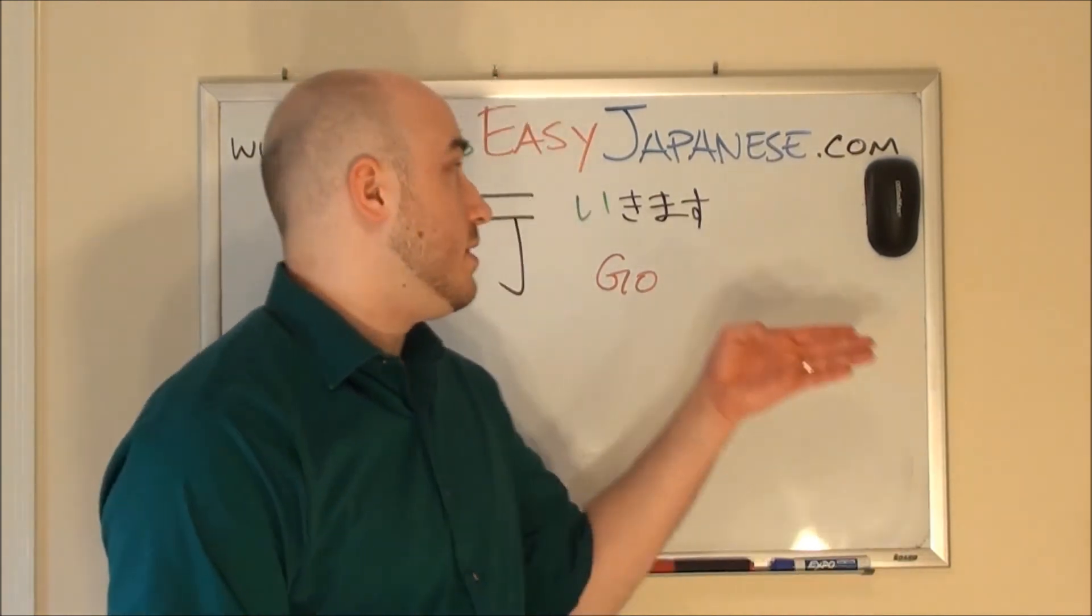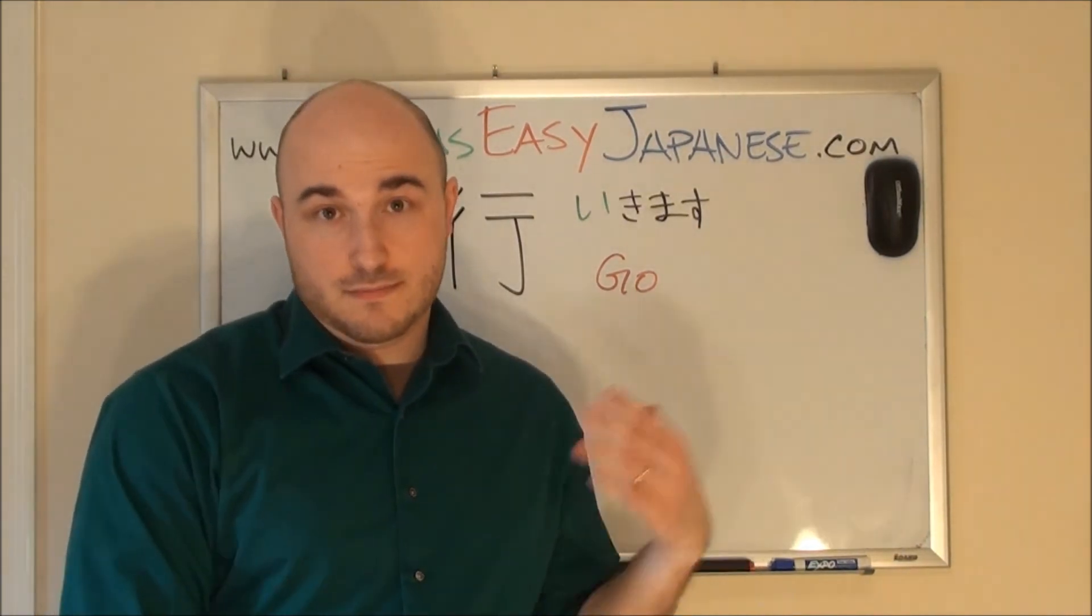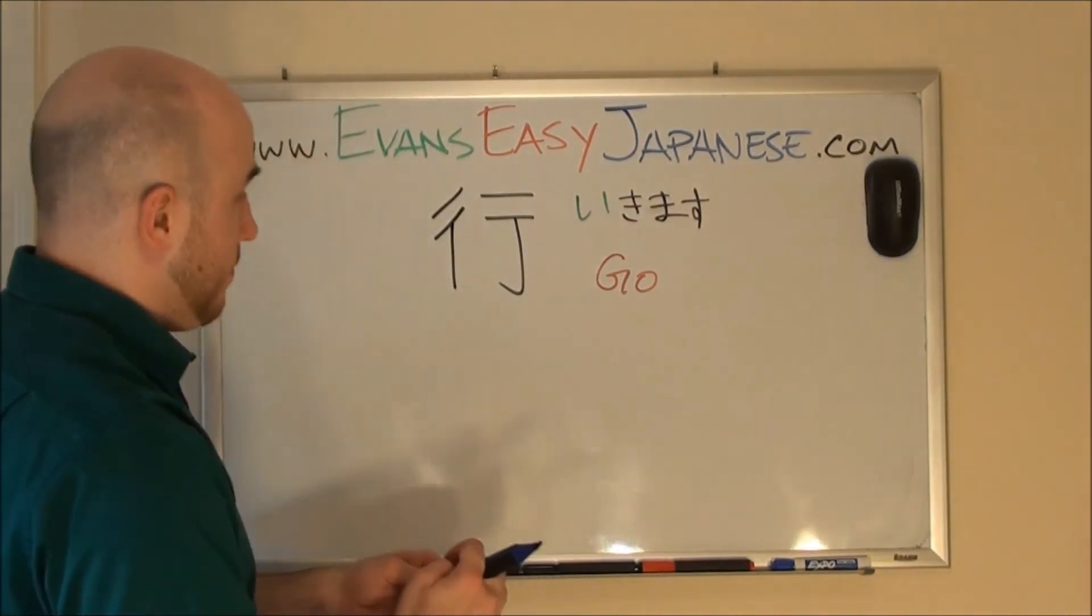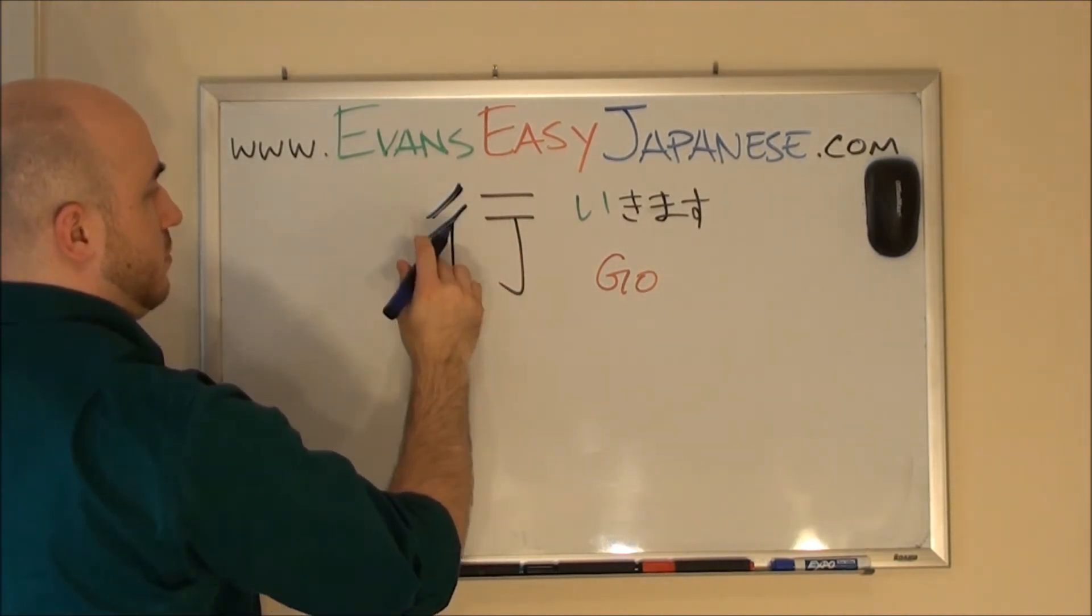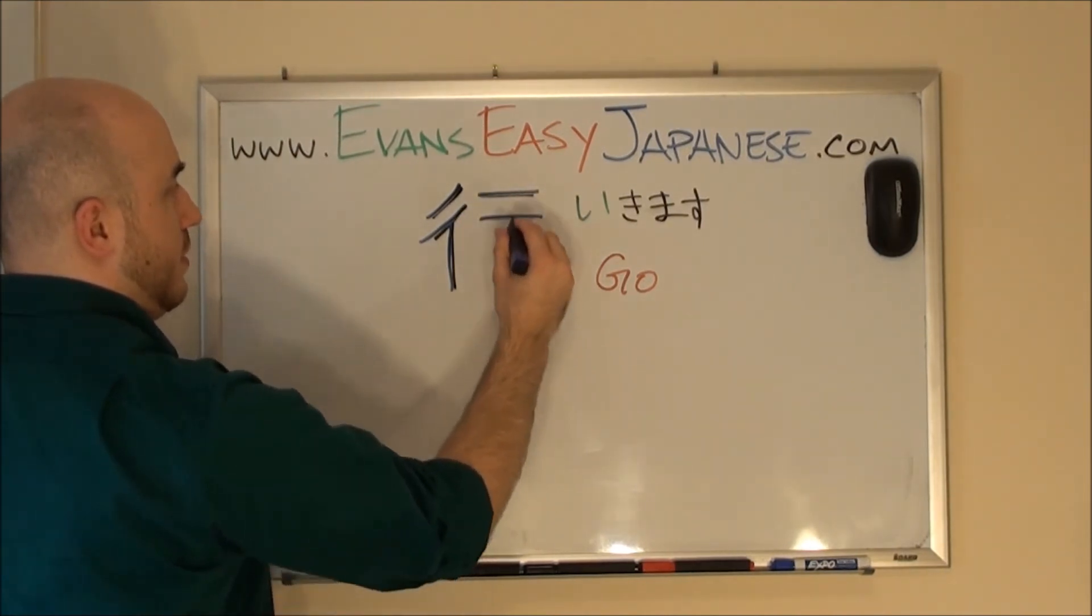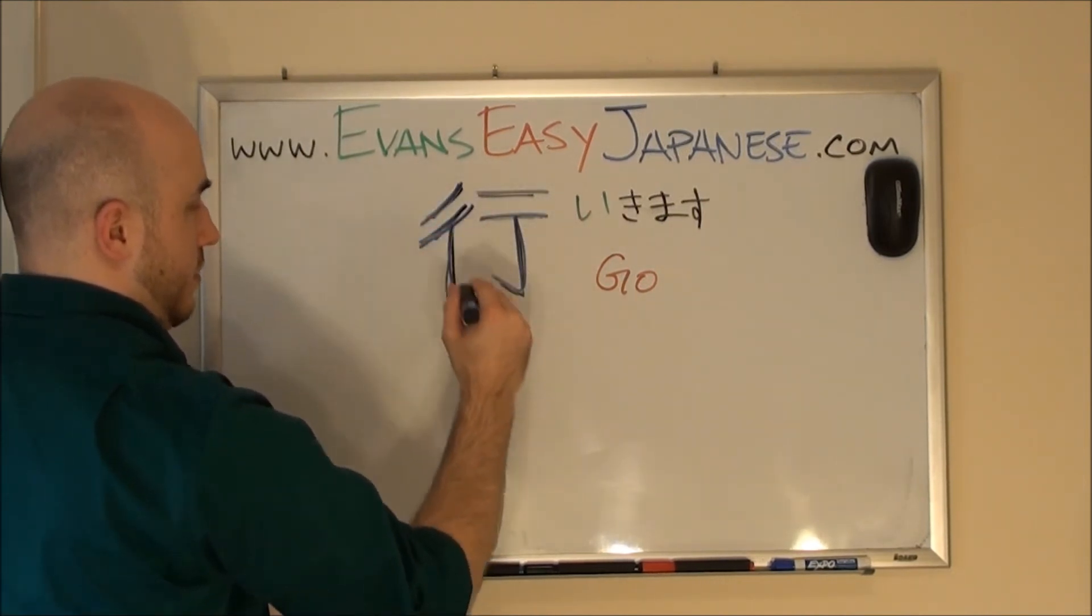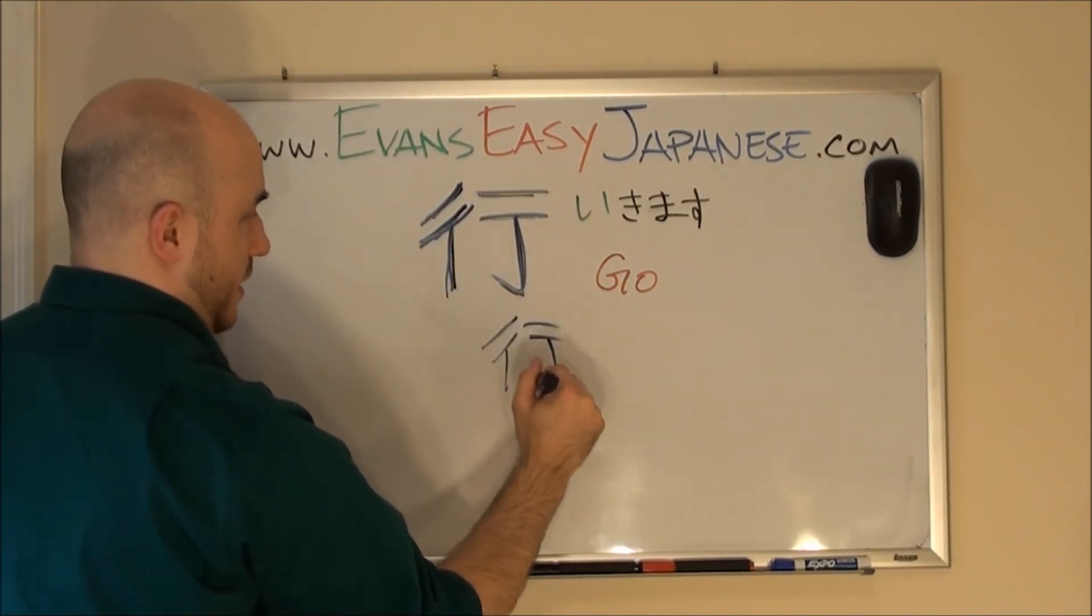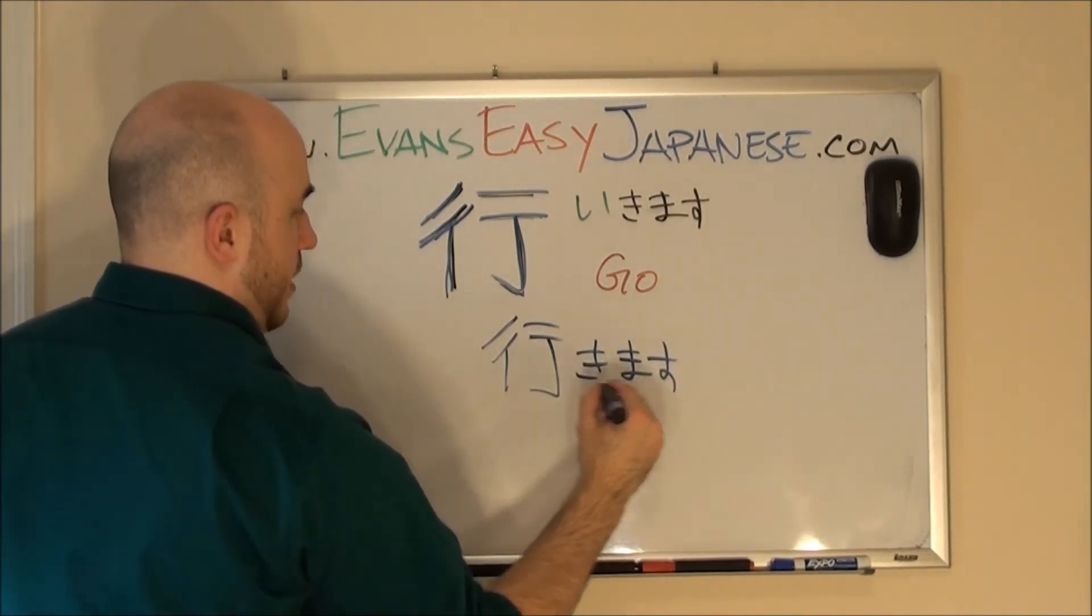And here we have the last kanji I'm going to be teaching today. This is the i of ikimasu. Ikimasu. I, ikimasu. It means to go. Here we go. Let's learn the stroke order. One, two, three, four, five, six. One, two, three, four, five, six. One, two, three, four, five, six. Followed by ikimasu. Ikimasu.